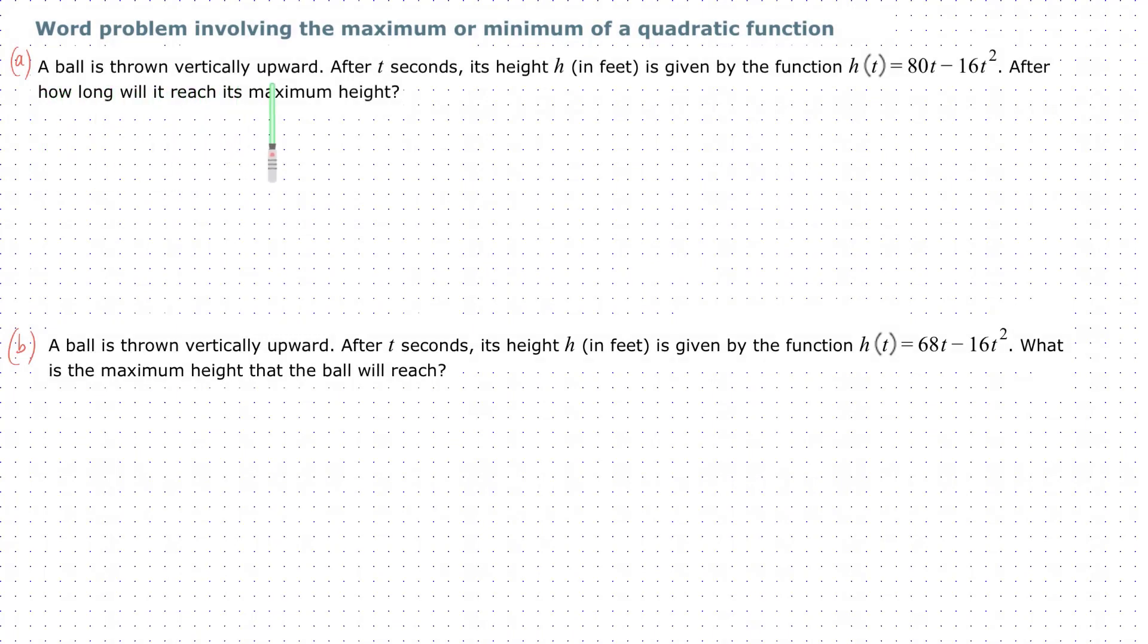A ball is thrown vertically upward. After t seconds, its height h in feet is given by the function h(t) = 80t - 16t². After how long will it reach its maximum height?